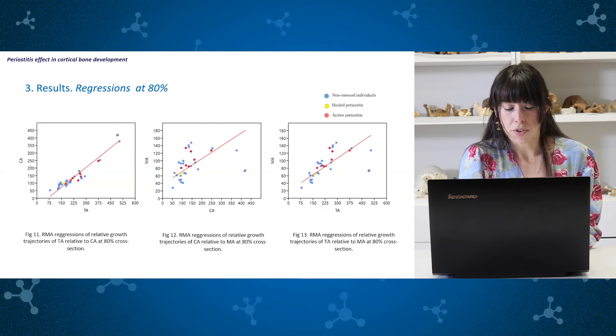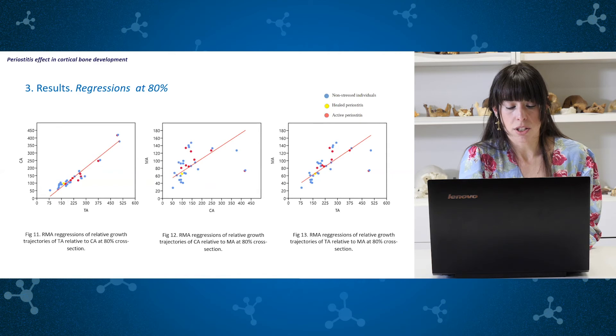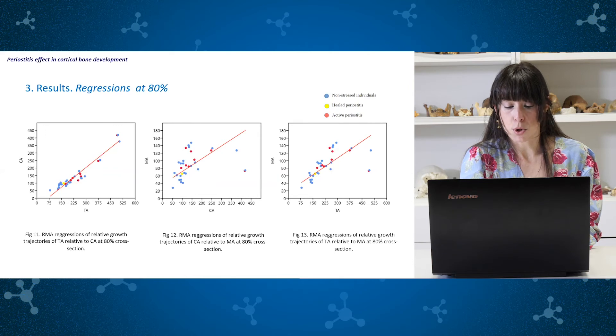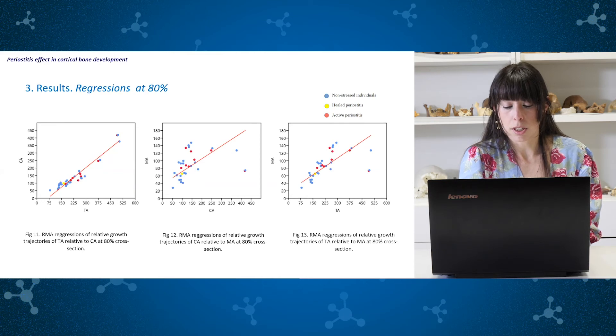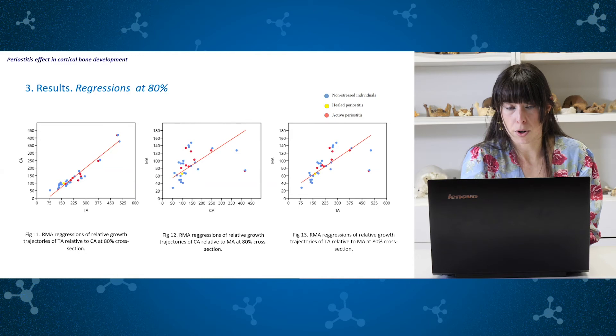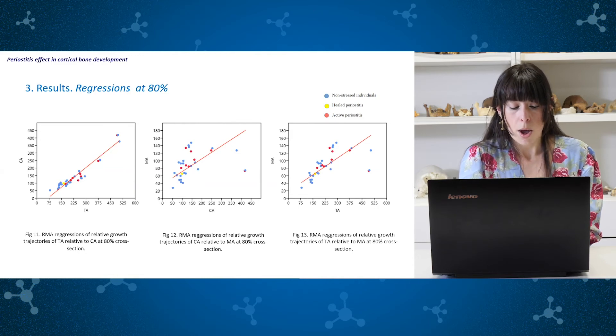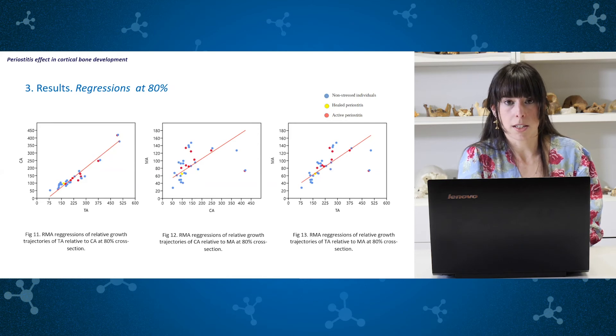The patterns followed by the three reduced major axis regressions are similar to those analyzed at 50%, although there is an increase in medullary area relative to cortical area at this level. No statistical difference in standardized residuals was found at this cross section either for healthy compared to pathological individuals. We can also see here the dispersed distribution of the two adolescent individuals.